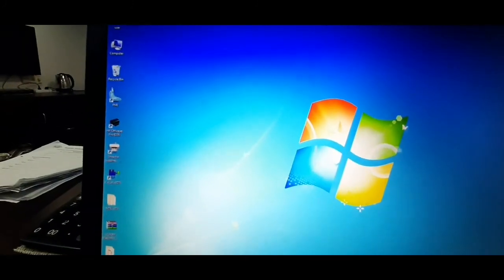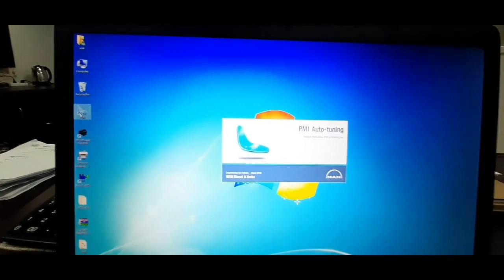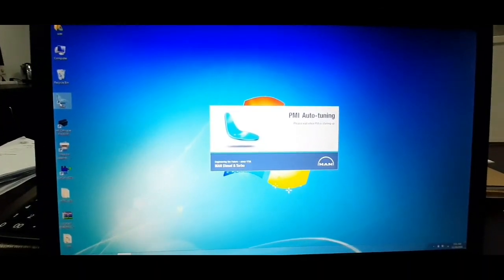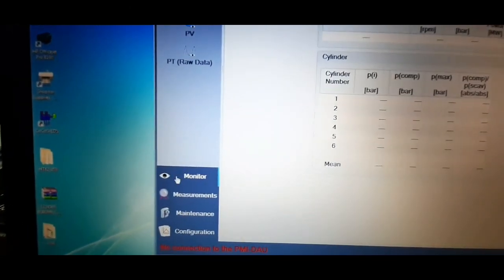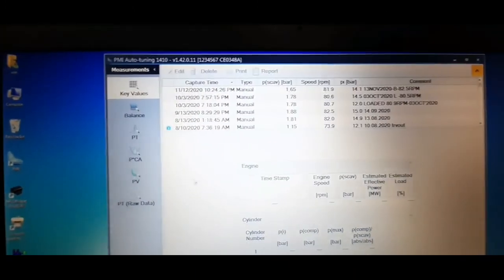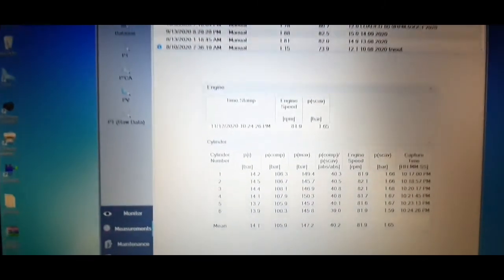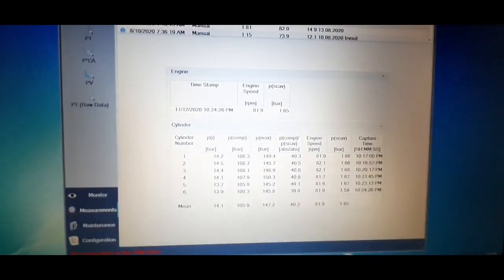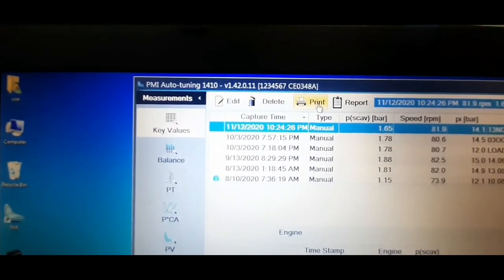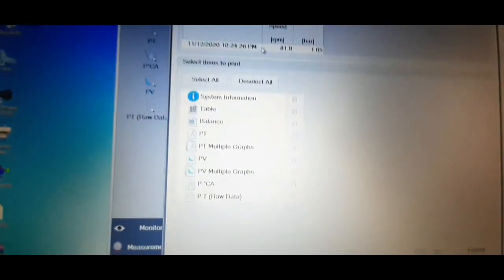In order to transfer the file of the measured data, open the PMI autotuning folder, then go to measurements, and select the required file. All the readings will be displayed on the main page. Now select report on the top menu. A print measurement report page will be displayed. Select the items you need to print. Here I will select all to view graphic presentation.